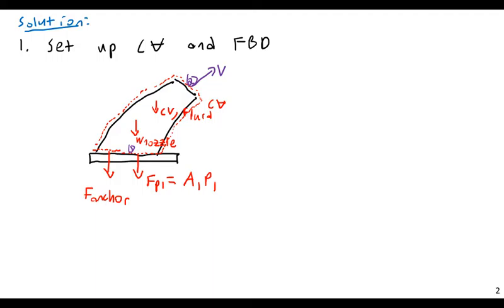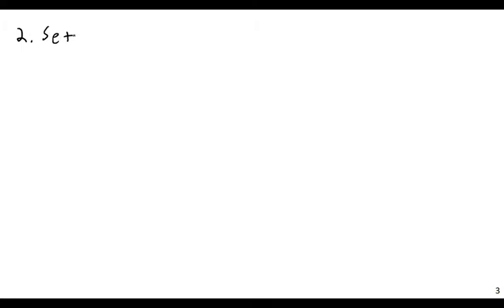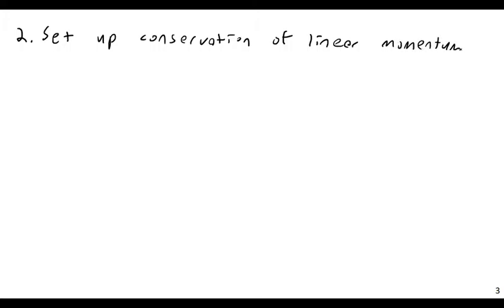Step two is to set up the conservation of linear momentum equation. At least when the control volume isn't deforming, it collapses to: sum of forces equals Q₂ρ₂V₂ minus Q₁ρ₁V₁. Since we only want the vertical force, I'll look at only the y-components. The sum of forces in the y-direction equals Q₂ρ₂V₂y minus Q₁ρ₁V₁y.